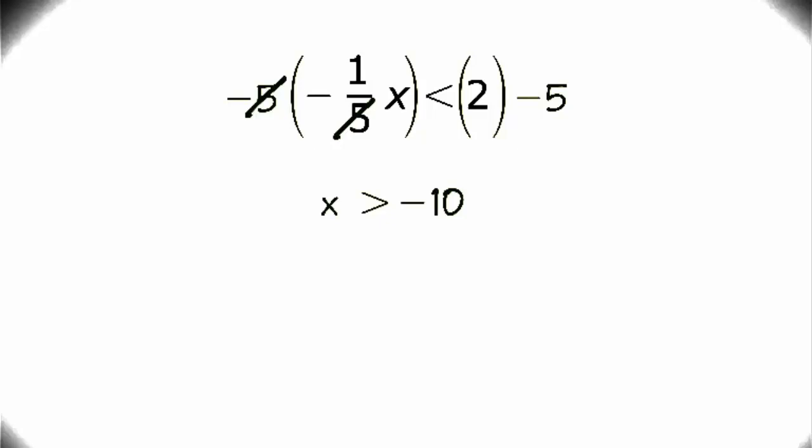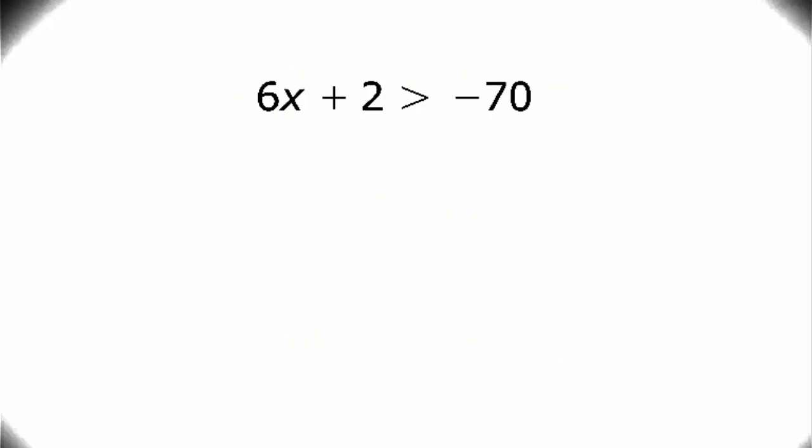And we can check that right now. If x is equal to 2, then negative 2 over 5 is in fact less than 2. You can try plugging in a number that is less than negative 10, and you'll see that this inequality will not hold.